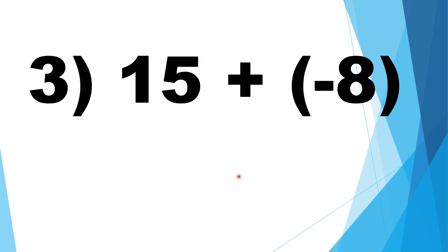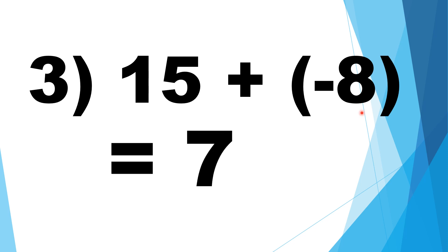Number 3: positive 15 plus negative 8. Positive and negative are unlike signs. Subtract and copy the sign of the bigger number. 15 minus 8 is equal to 7. Then, what is the sign of the bigger number? Positive. So, the sign of the sum is positive. Positive 15 plus negative 8 is equal to positive 7.